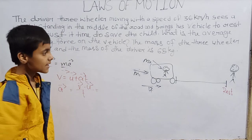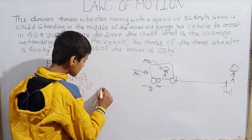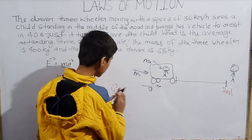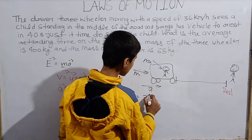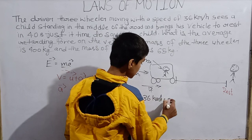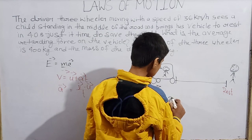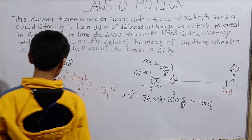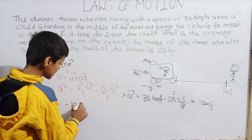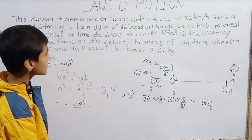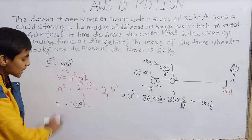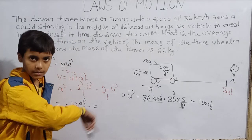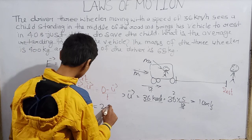Since the vehicle comes to rest, the final velocity v = 0. So vector a = (0 − vector u) / t = −vector u / t. The initial speed u is 36 km/h, which in SI units is 10 m/s. So acceleration a = (0 − 10) / 4 seconds = −10 / 4 = −2.5 m/s².